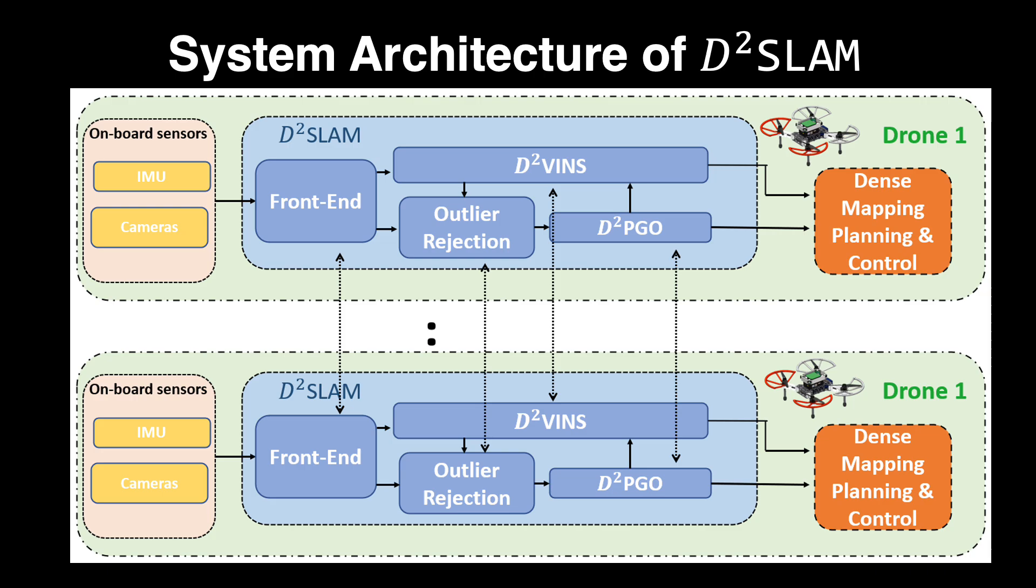Based on the realistic requirements and communication conditions, as well as the swap limitations of autonomous UAVs, we propose a novel C-SLAM system, D-Square Slam, a decentralized and distributed visual inertial SLAM system.